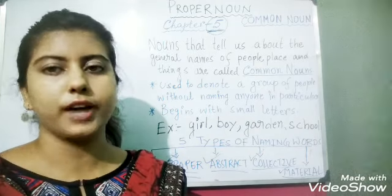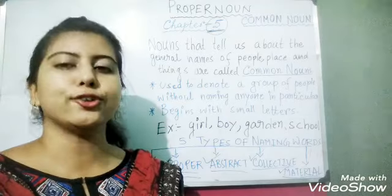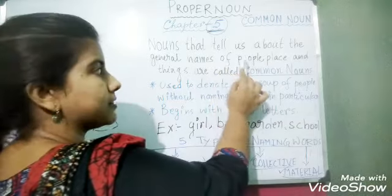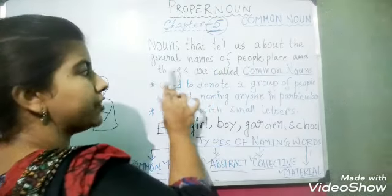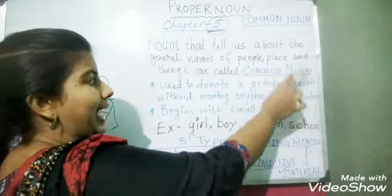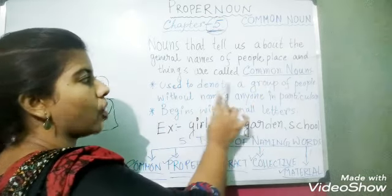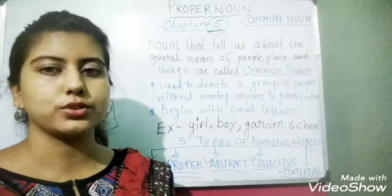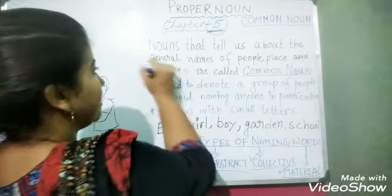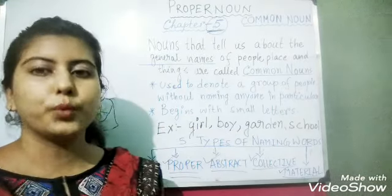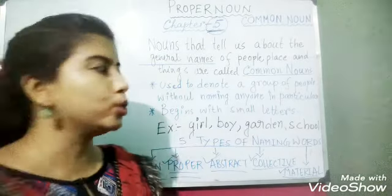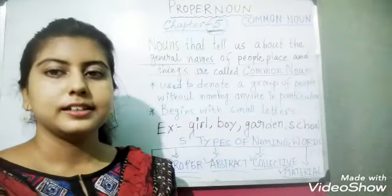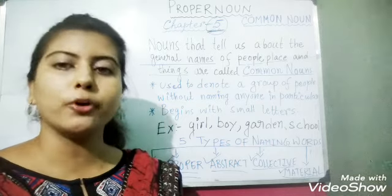What is common noun? Let's look at the book. Nouns that tell us about the general names of people, place, and things are called common nouns. So the common nouns are the general names that we have given to people, place, and things — they are called common nouns.